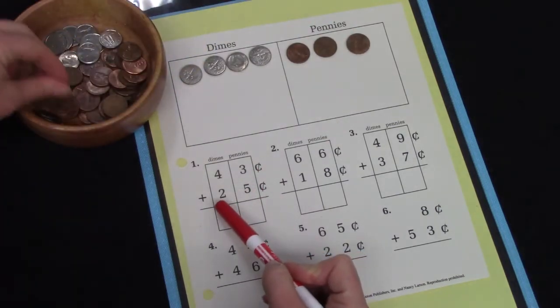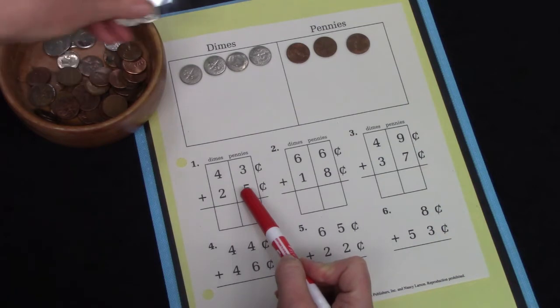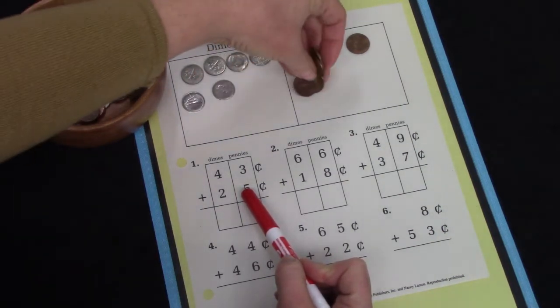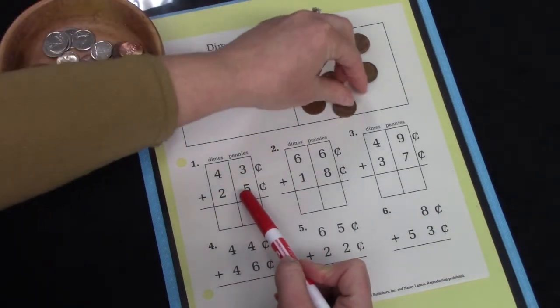And then I'm going to add 25 to that. So we're going to add 10, 20, 21, 22, 23, 24, and 25.